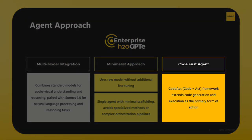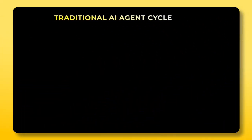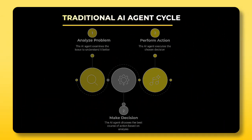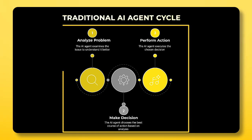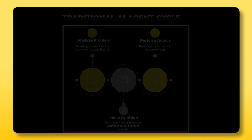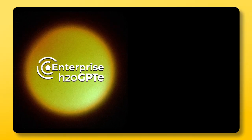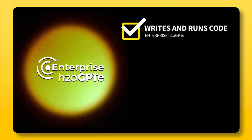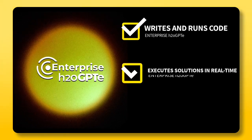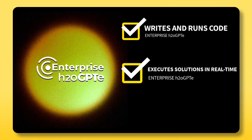Finally, another key differentiator of HLGBT-e is its code-first agentic framework. Traditional AI agents follow a reason-and-act cycle — analyzing a problem, making a decision, and then performing an action. HLGBT-e takes a more direct approach: instead of just reasoning about solutions, it writes and executes code as its primary way of taking action.